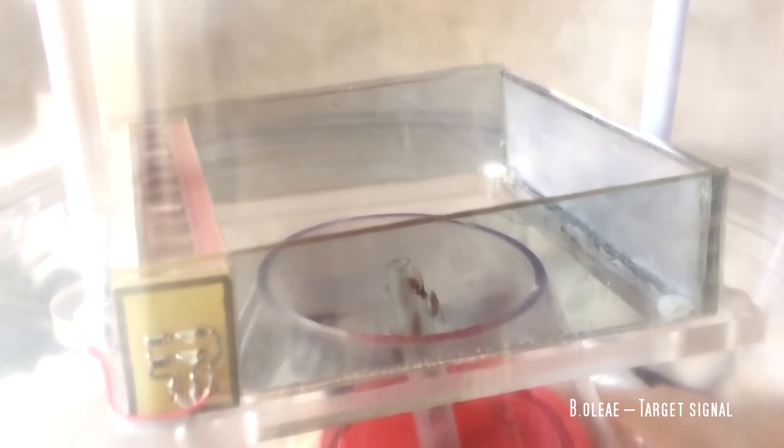This video presents our most recent results on an electronic trap for automated monitoring of insect populations of fruit flies and Bactrocera oleae in particular. The aim is the automatic monitoring of pests in agricultural crops.